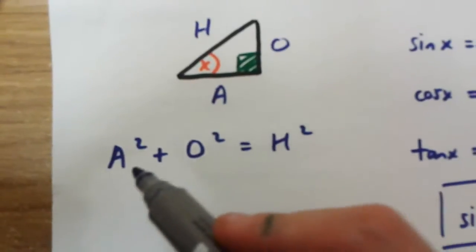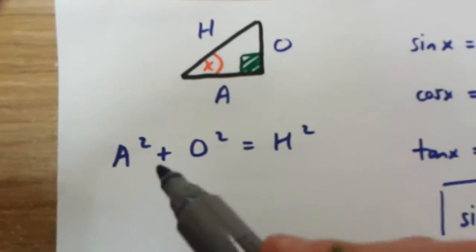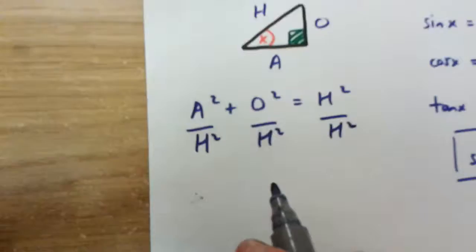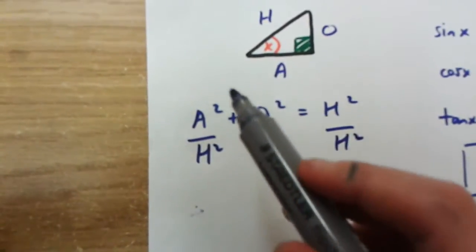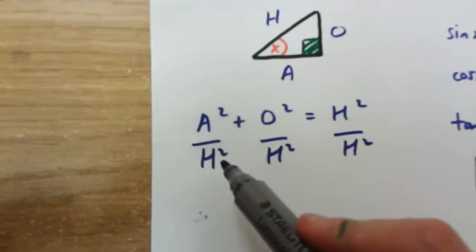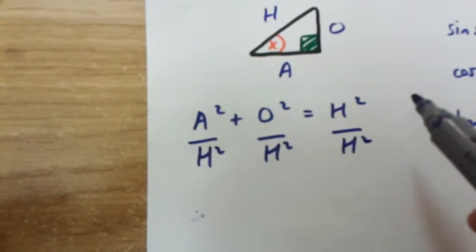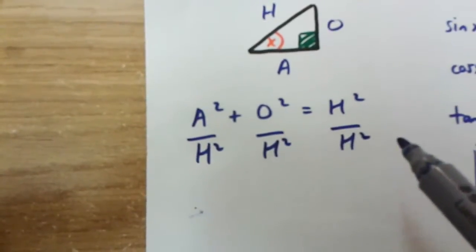Look what happens to this equation when we divide everything by h squared. What we get is a squared over h squared plus o squared over h squared equals h squared over h squared.